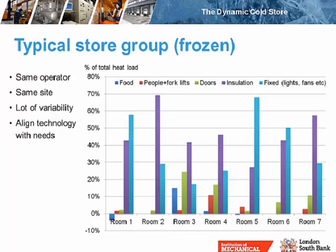In room four, people and forklifts have a reasonably high heat load, so something like automation may have some benefits there, but very little benefit in rooms one or two. In room five, you've got a high heat load from lights and fans, so that room would benefit from LED lights or more efficient fans. Whereas in room three, although it's still a relatively high heat load, it's not the top priority. It's really important to align your technologies with the specific need of that particular store.